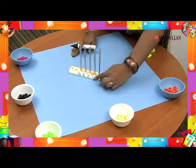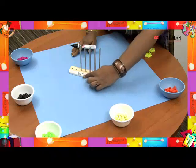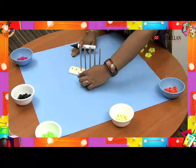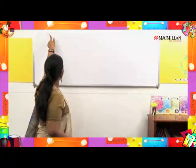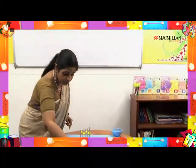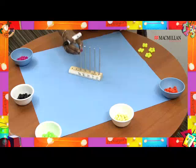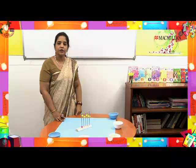Do you notice? On the abacus we have the 1s, 10s, 100s, 1,000s, and 10,000s positions. So if I want to represent 10,000, this is how 10,000 looks on the abacus.